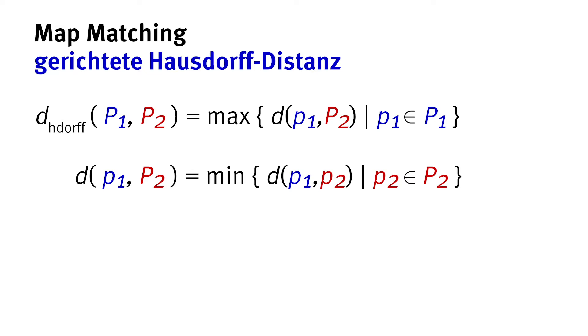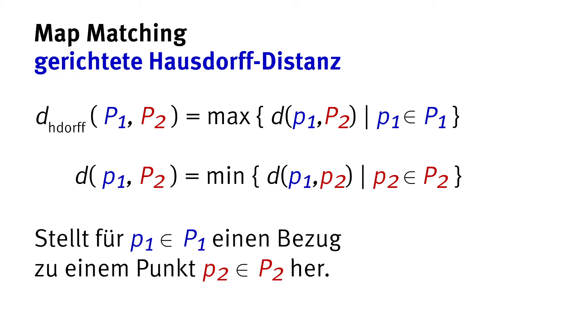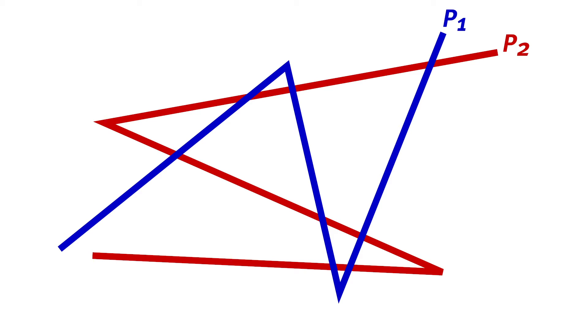Now these two polylines are quite dissimilar, so in a way it's not entirely fair to compare them, but if you don't have a lot of GPS points and there's a bunch of noise, something like this could happen.